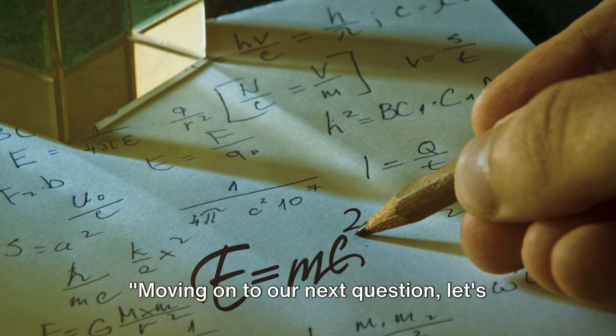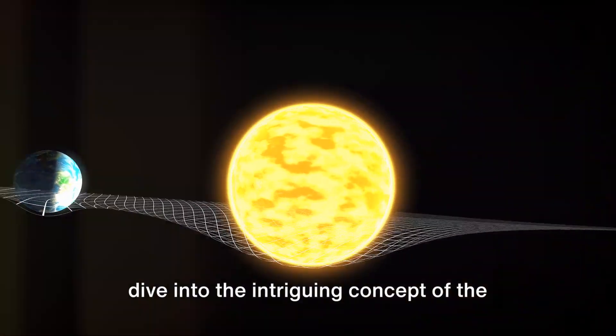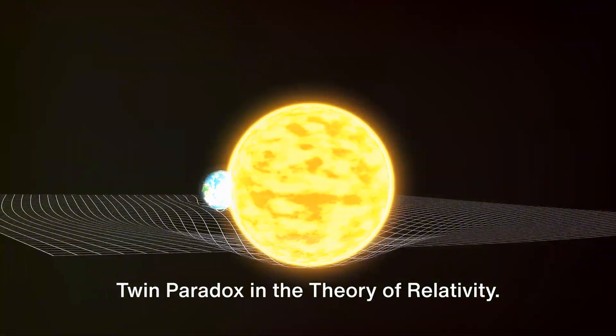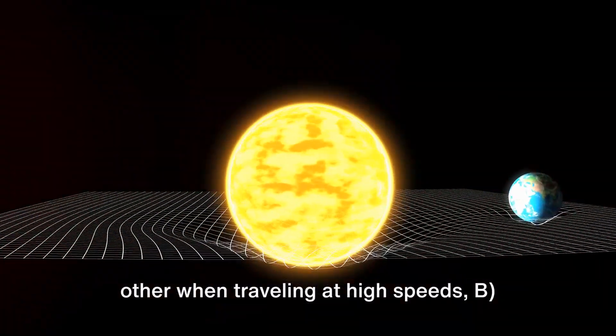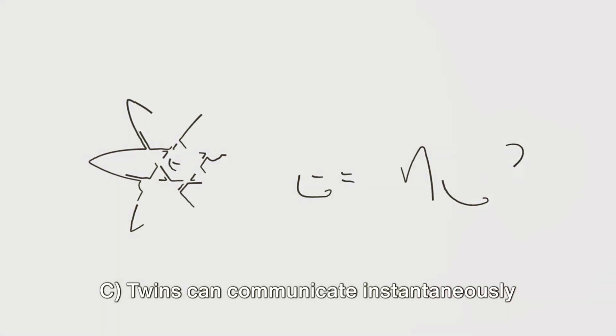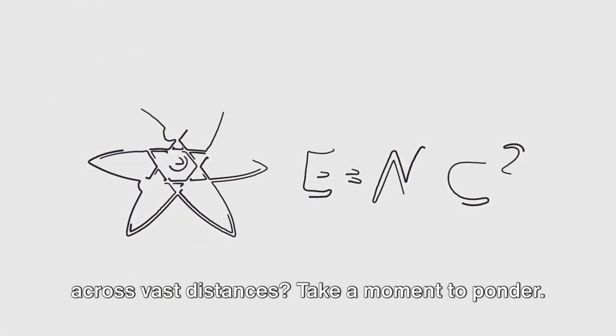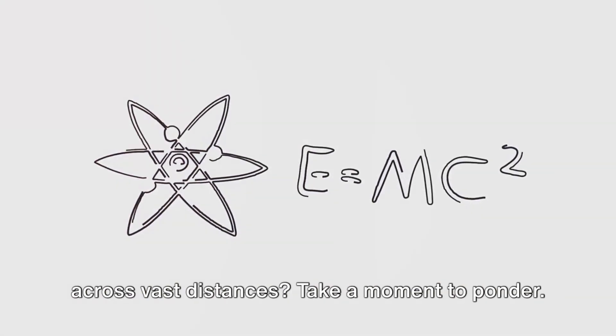Moving on to our next question, let's dive into the intriguing concept of the twin paradox in the theory of relativity. Is it A. One twin ages faster than the other when traveling at high speeds? B. Twins can exist in parallel universes? Or C. Twins can communicate instantaneously across vast distances?